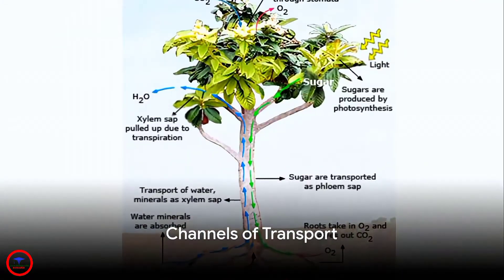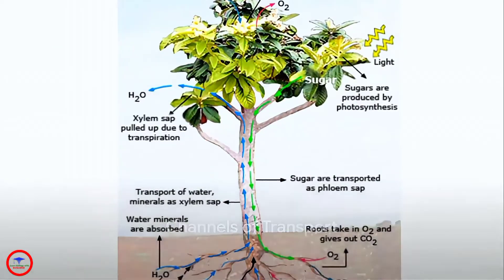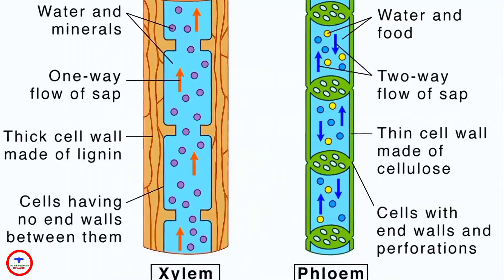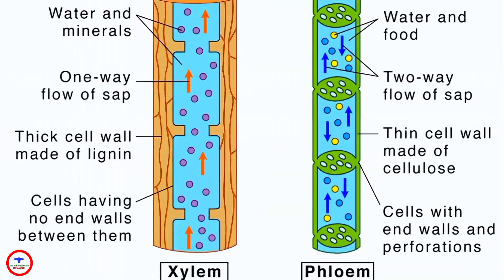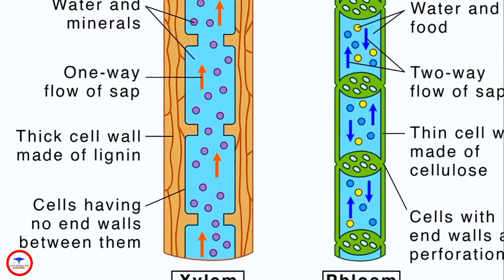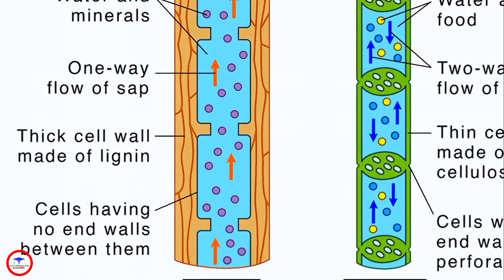So how do these substances travel? Enter the channels of transport, the xylem and phloem. The xylem, composed of long hollow cells called tracheids, transports water and minerals from roots to the rest of the plant.